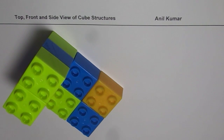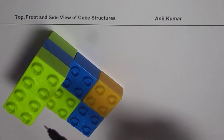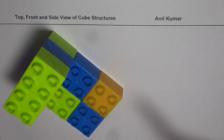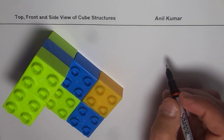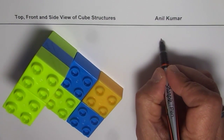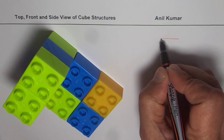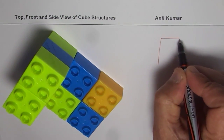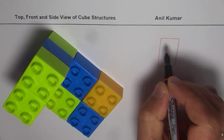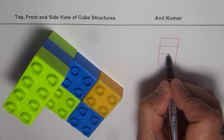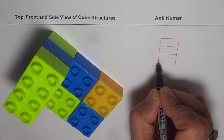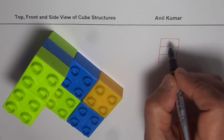Let's begin by sketching the top view first. When we look from the top we see six squares — imagine they're all cubes. If you have graph paper you can do a good job; these rough diagrams will help you understand how to sketch.